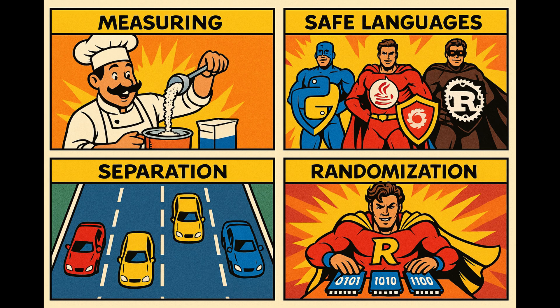How do we stop these attacks? Always check if your data fits before storing it, like measuring ingredients before adding them to a recipe. Use Python, Java, or Rust — these languages have built-in safety features that catch overflow attempts automatically. Keep data separate from executable code, like having separate lanes for different types of traffic. Randomize where things are stored in memory; if attackers can't predict memory locations, their overflow attacks fail.